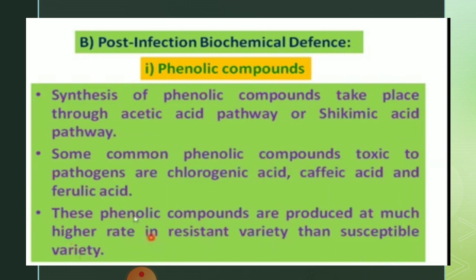When a pathogen infects the plant, it either accelerates the synthesis of these compounds adjacent to the infection site, or it accelerates the flow of pre-existing amounts from healthy tissues towards the infected ones. These phenolic compounds are produced at a much higher rate in resistant varieties than in susceptible varieties.